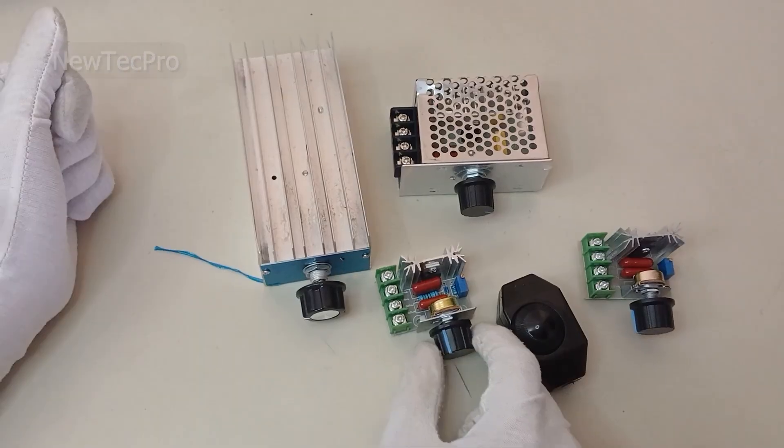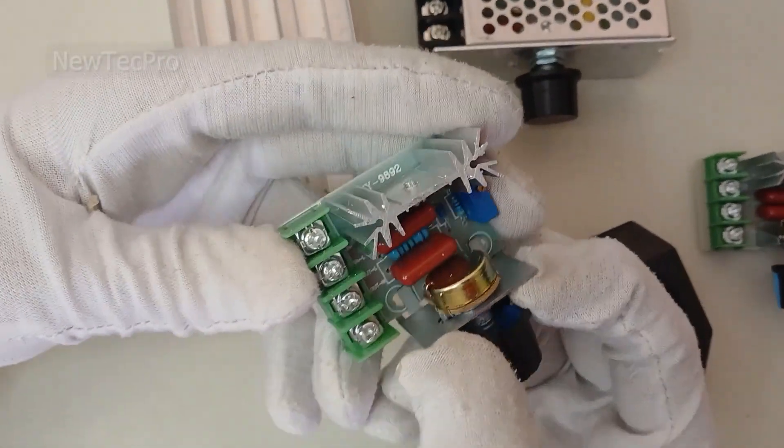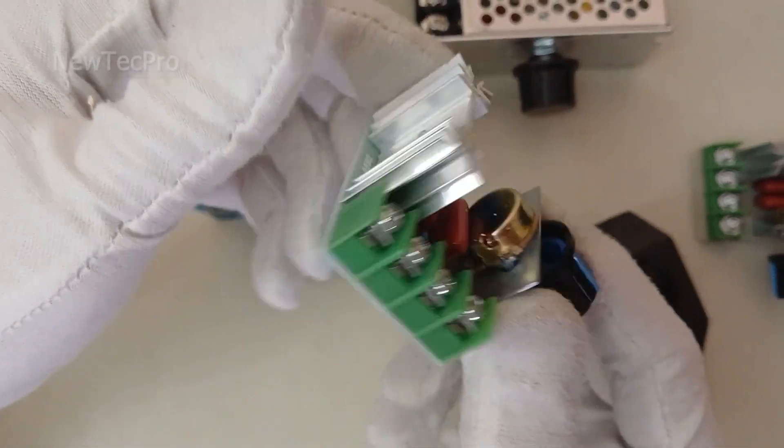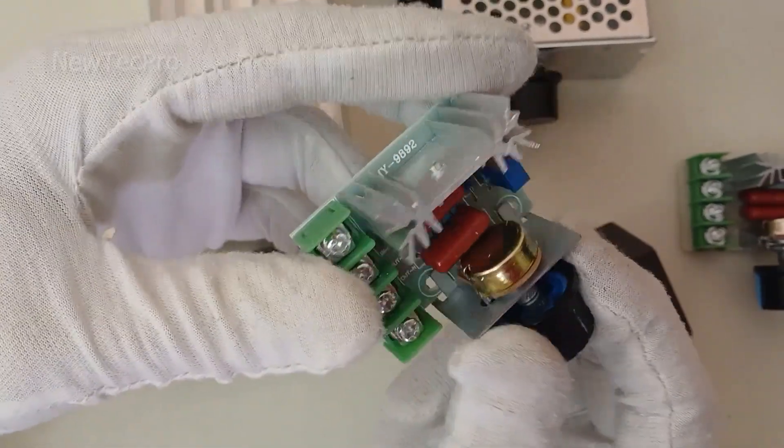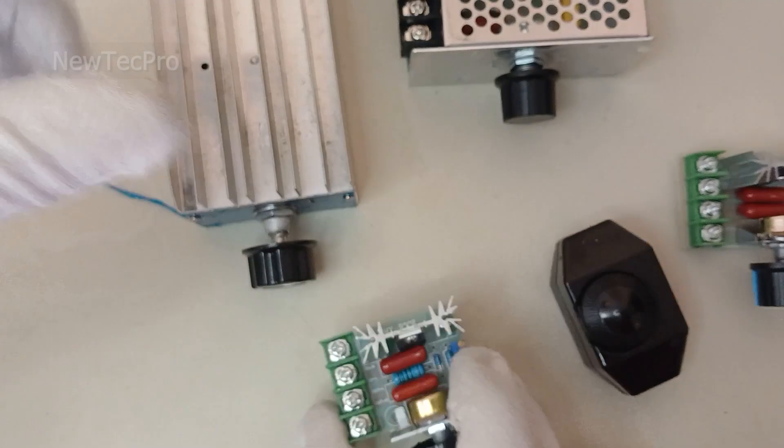For this video, we choose and test this model: the 2000 watt AC dimmer.